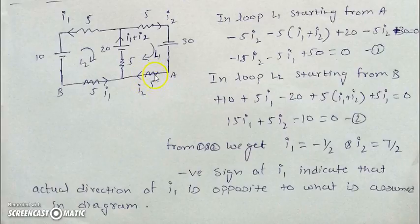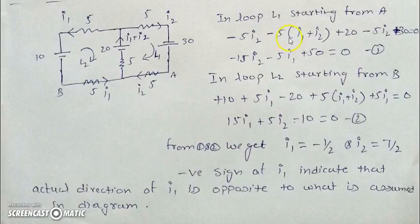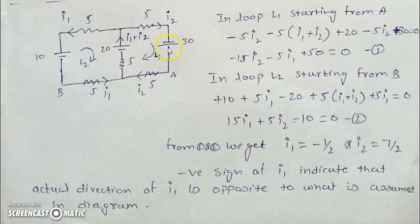In loop 1, moving clockwise from A, we first encounter a resistance with current I2 in the direction of motion, giving minus 5 times I2. Then a 5 ohm resistance carrying current I1 plus I2 in the direction of motion gives minus 5 times (I1 plus I2). Jumping a battery from negative to positive gives plus 20. Crossing the next resistance in the direction of current gives minus 5 times I2. Jumping another battery from negative to positive gives plus 30. Returning to point A gives zero. We simplify this as equation 1.